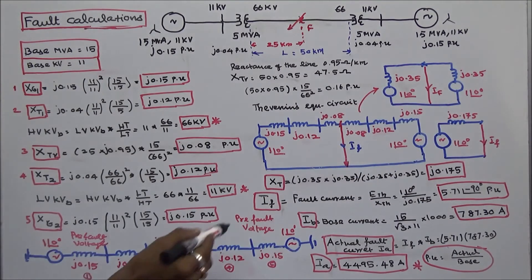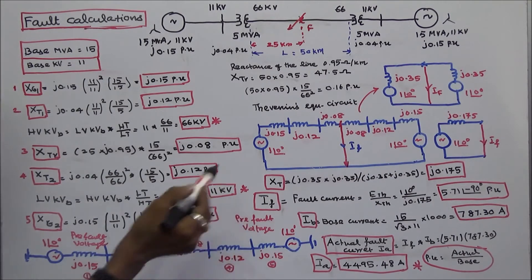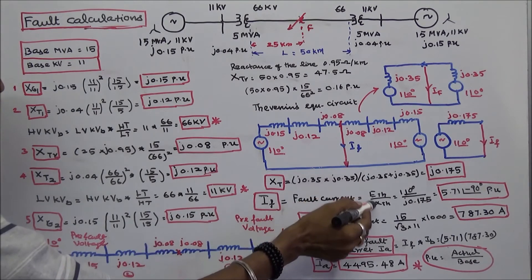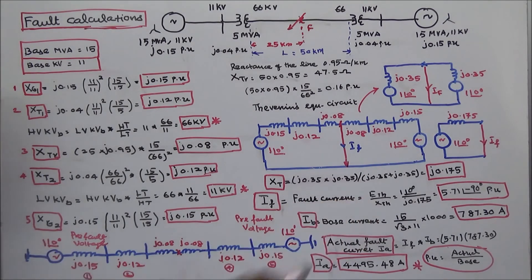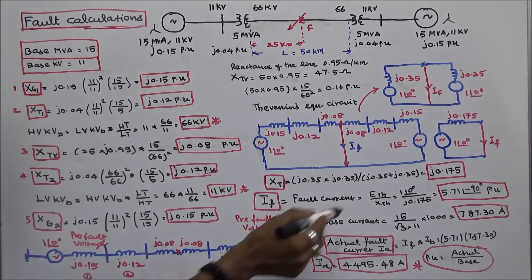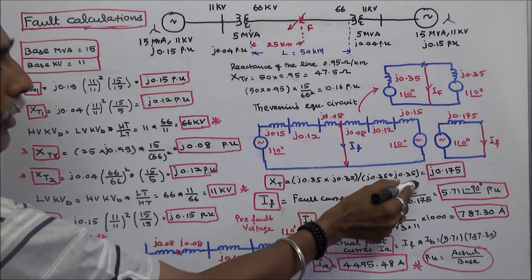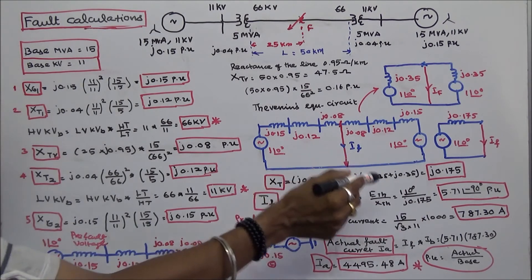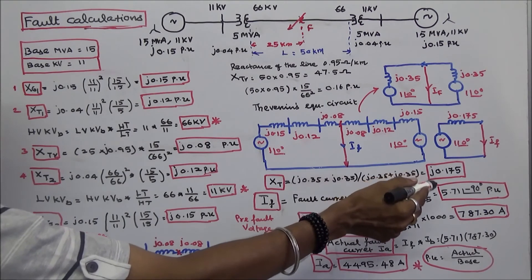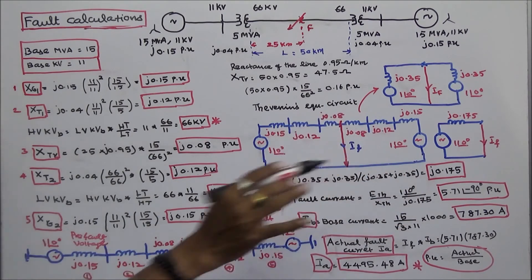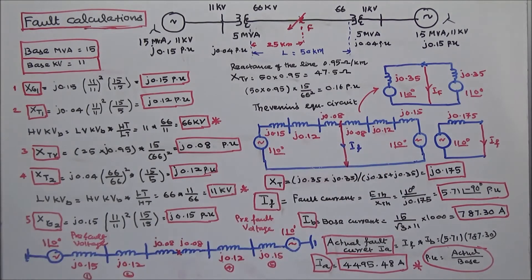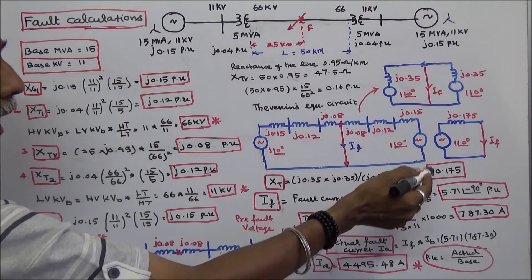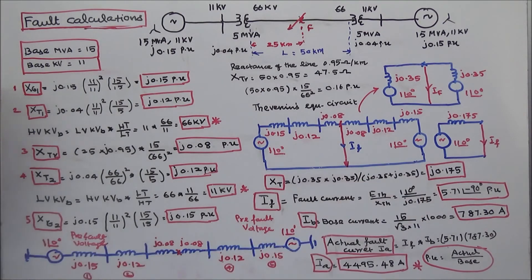We can now calculate the fault current. Fault current equals E_Thevenin divided by X_Thevenin = 1∠0° / J.175 = 5.71∠−90° per unit. So the per-unit fault current is 5.71∠−90°.